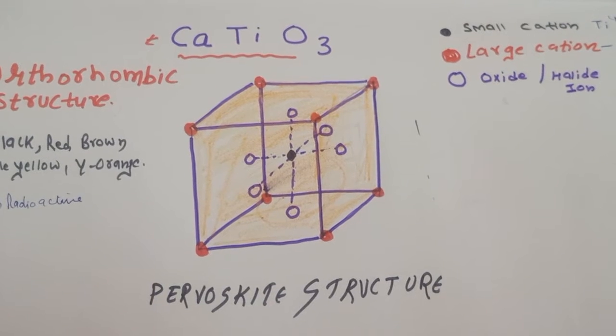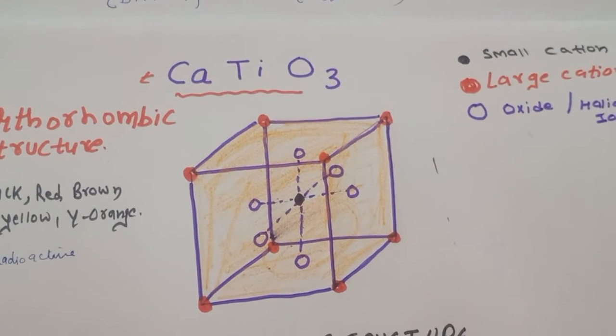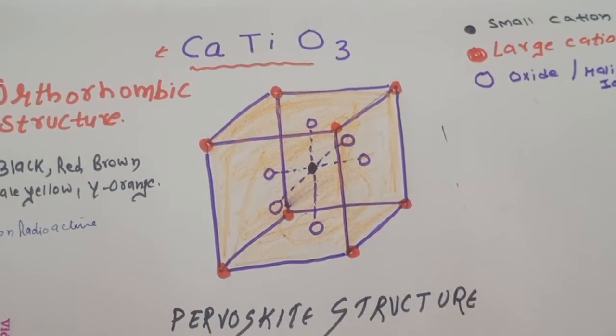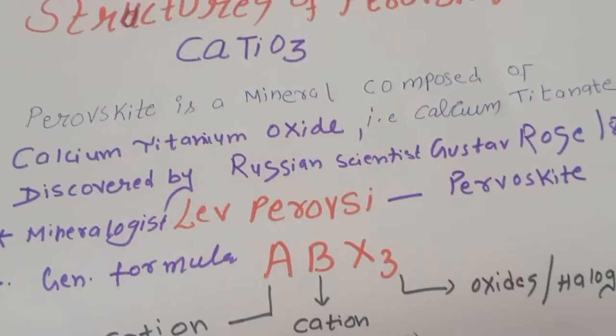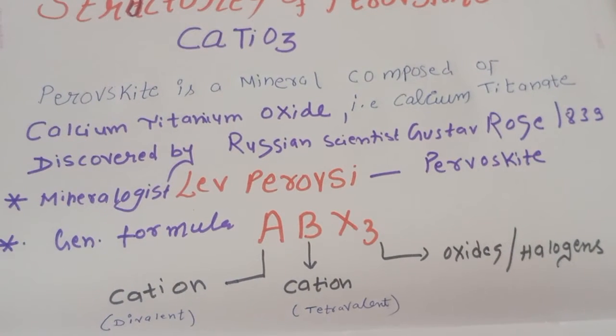Why these structures are termed as the perovskite structure? Now let us see the contribution of the scientist for the perovskite. Generally this structure is a mineral composed of calcium titanium oxide, or we can also say that it has a calcium titanate.